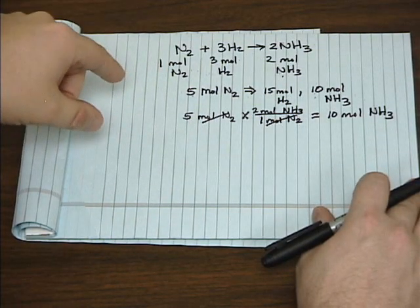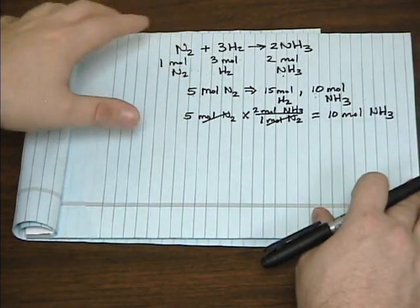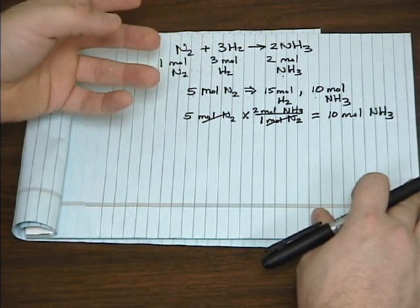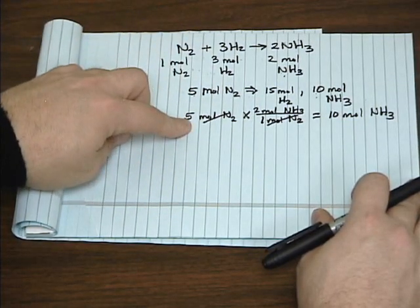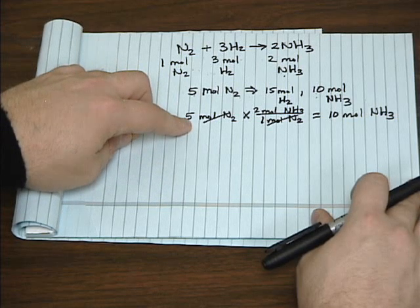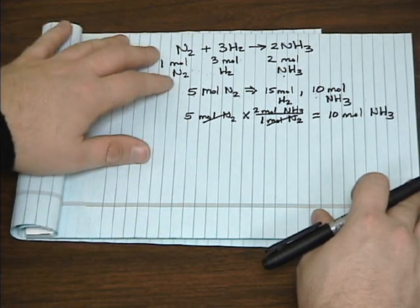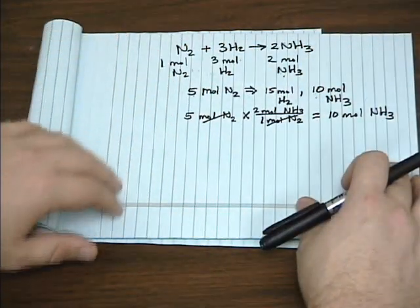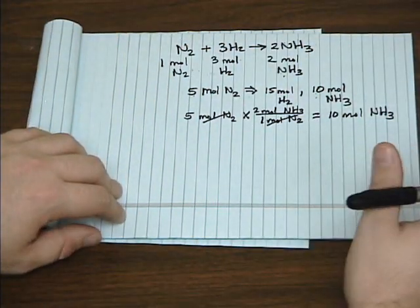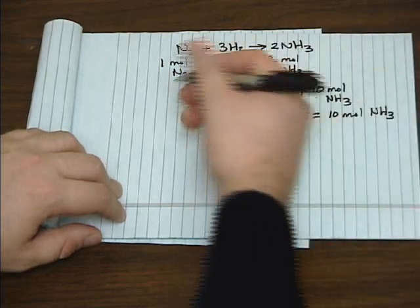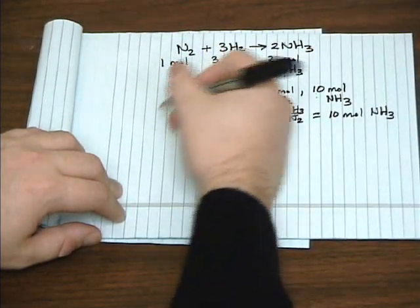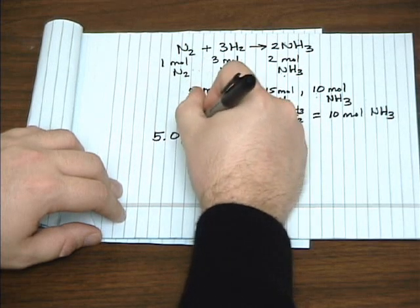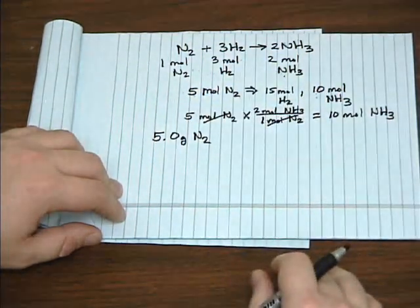Now, one difference between a lab and a kitchen is that you can count out eight tomatoes or four cloves of garlic. You can't really count out five moles of a chemical, even if you could reach down and pick them out one at a time. It's more common to start with some other unit of measurement, for example, mass. So instead of five moles of nitrogen, let's say you have five grams of nitrogen.